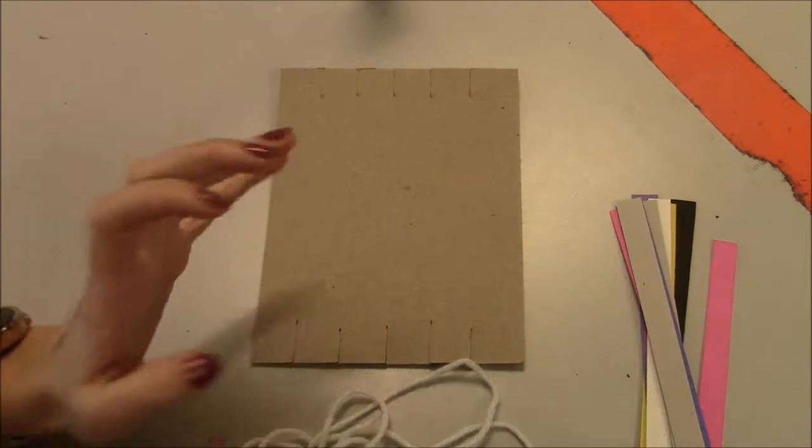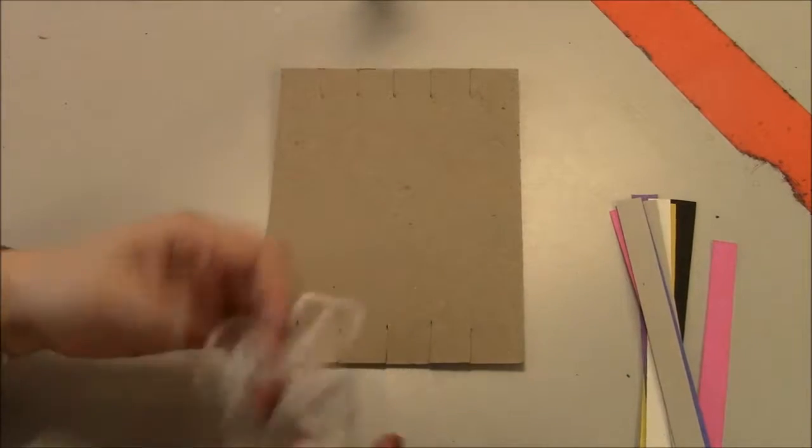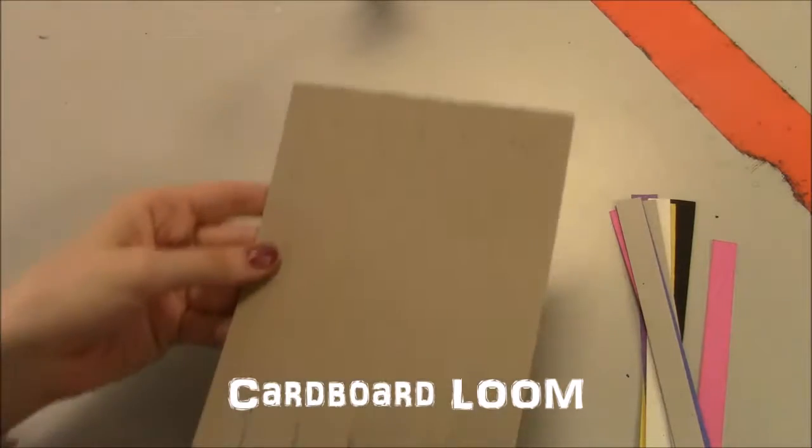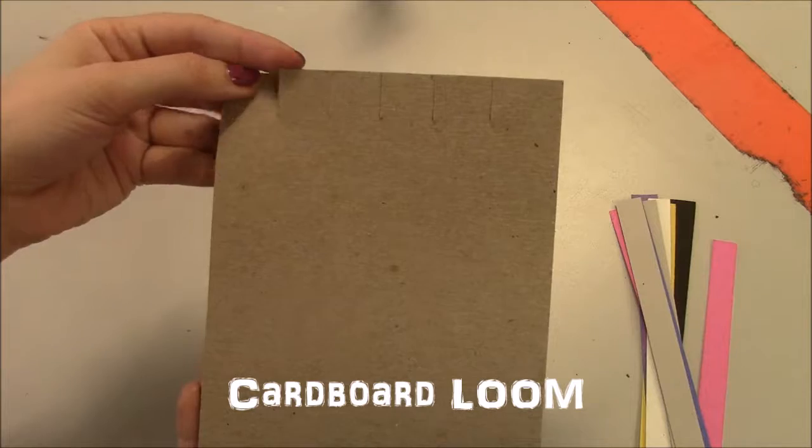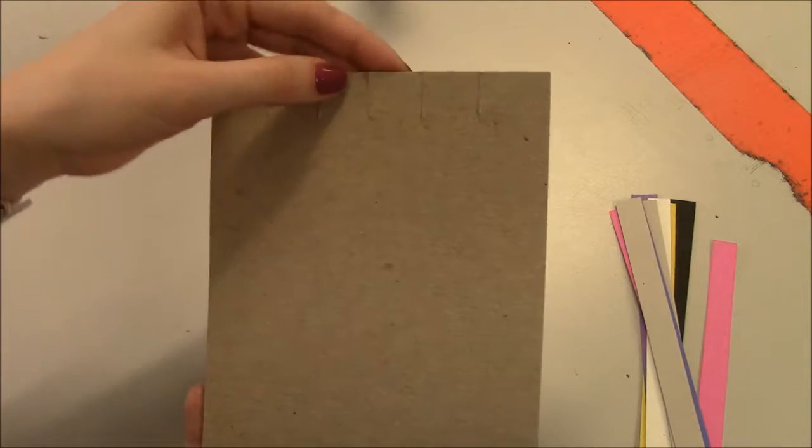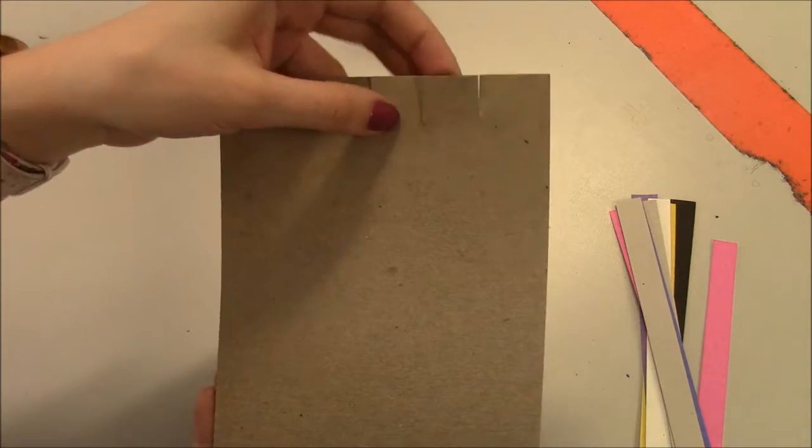Okay, my fiber artists, here's a little review of how we set up our cardboard looms. Now this piece of cardboard has slits cut into it. Those are the slots that are going to hold your warp.